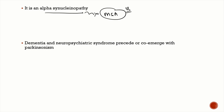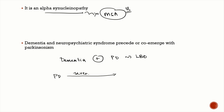How is Lewy body dementia different from the dementia that comes in Parkinson's disease? Whenever the dementia and the neuropsychiatric syndrome arise along with Parkinson's disease, that is Lewy body dementia. But when a patient is a known case of Parkinson's disease for several years — a long-standing Parkinson's disease — and then develops dementia and neuropsychiatric features, that is Parkinson's disease dementia.